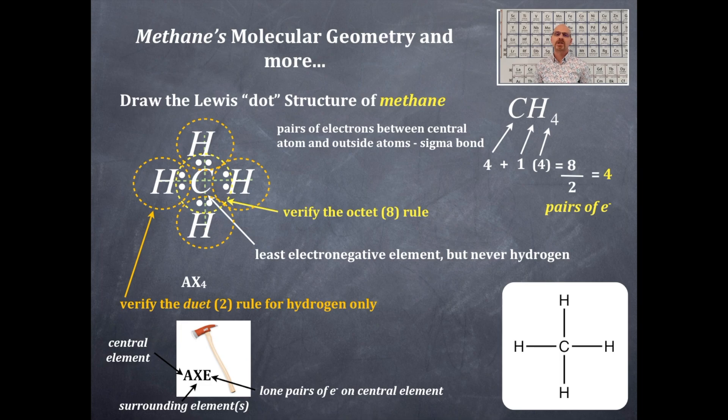From the AX4 structure, you need to know the name of the shape, or you could know that it's four bonding and zero nonbonding. That shape is tetrahedral. It has bond angles of 109.5 degrees. Now from this, we'll get our hybridization.